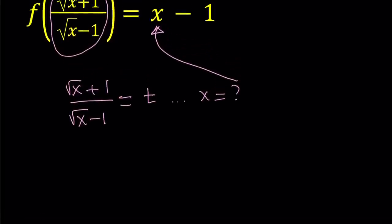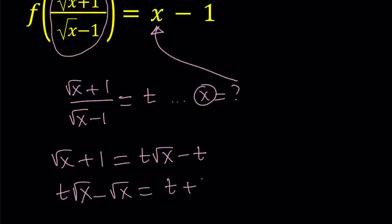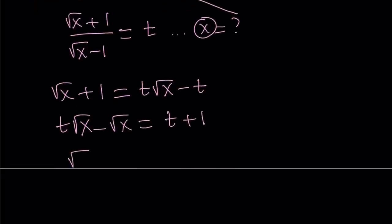So to be able to do this, we have to cross multiply and that's going to give us square root of x plus 1 equals t times the square root of x minus t. Remember, our goal is to solve for x. So let's put everything that contains an x on the same side. We get t square root of x minus square root of x equals t plus 1. Factor out square root of x, you'll get t minus 1 equals t plus 1. Then divide both sides by t minus 1.